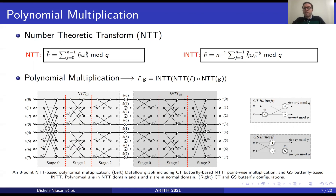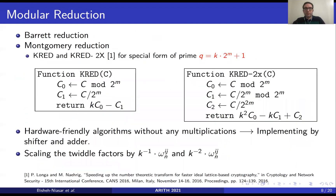As one can see, these two butterfly architectures require one modular addition, one modular subtraction, and one modular multiplication. For implementing the modular reduction, there are two main approaches studied in previous work: Barrett reduction and Montgomery reduction.